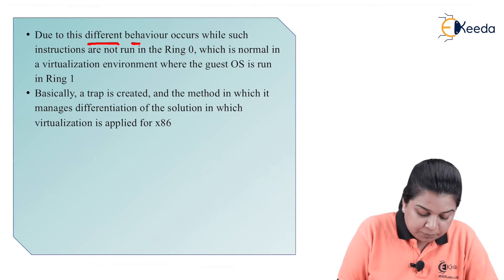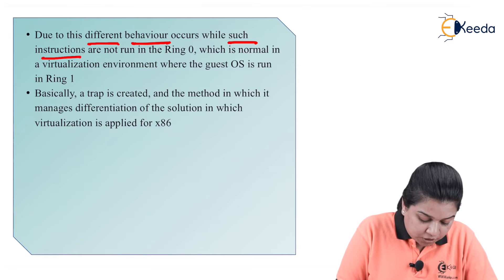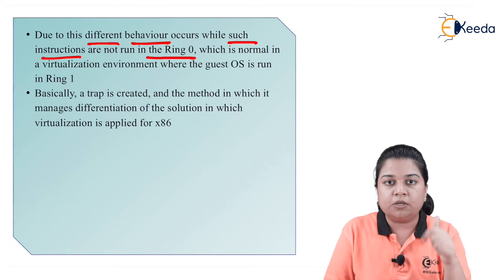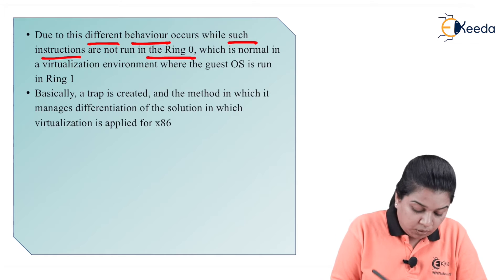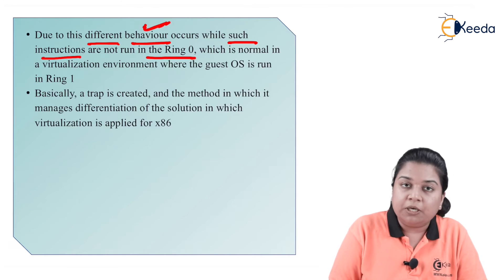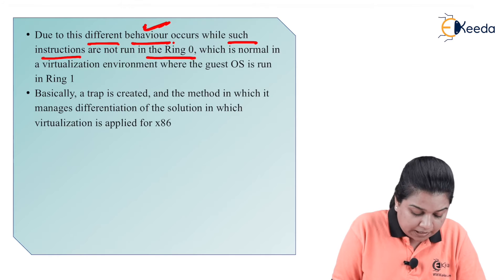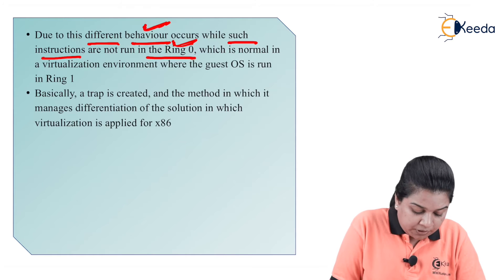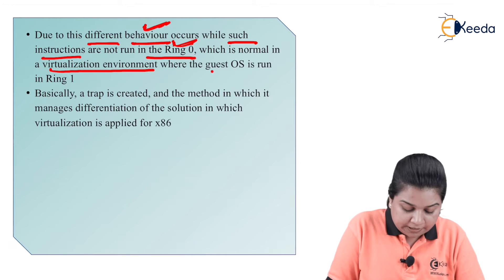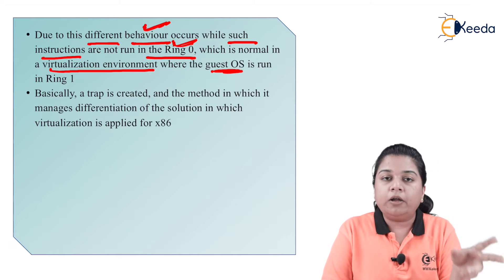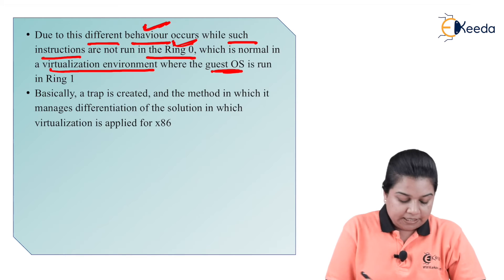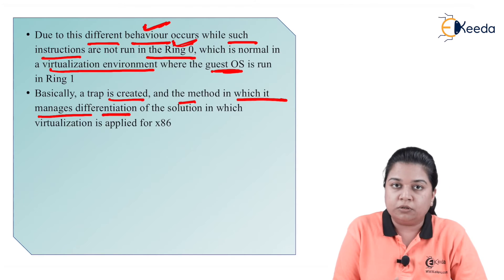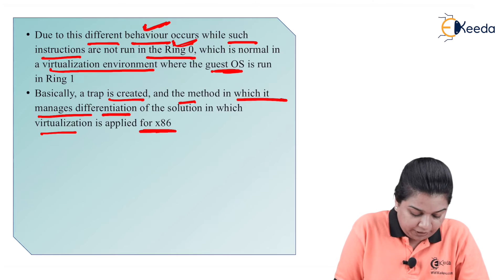Due to this, different behavior occurs when such instructions are not run in Ring 0. In a virtualized environment, the guest operating system runs in Ring 1, not Ring 0, so a trap is created — this is the method by which virtualization is applied for x86.